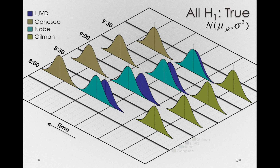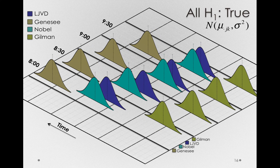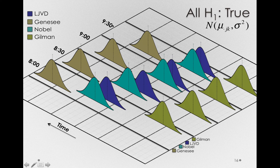Just for clarity, I'm going to spread out these distributions by putting another axis within each of the time sections so we can see them a little bit more easily. Of course, we observe these all at the same time, so we're really thinking of these time measurements as bins — all of the 8 o'clocks are in the first section, then 8:30s, 9s, and 9:30s.